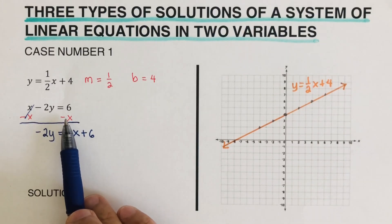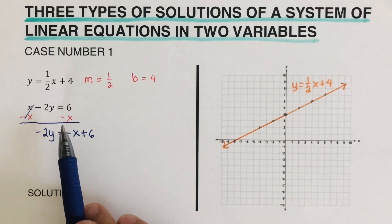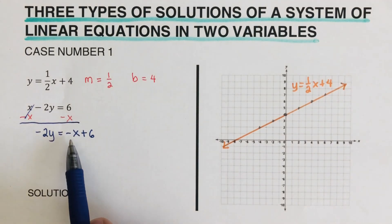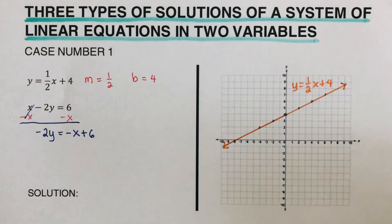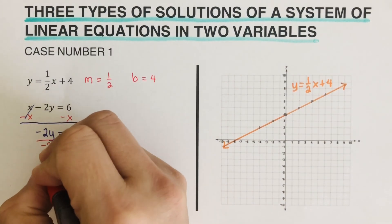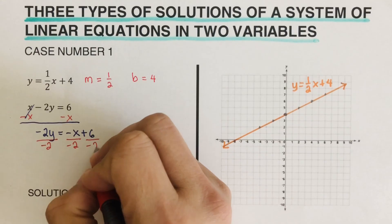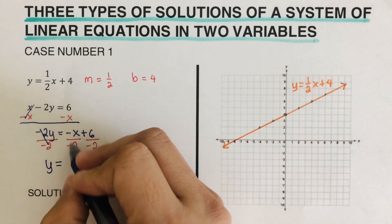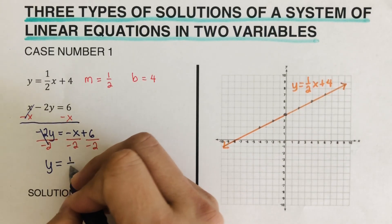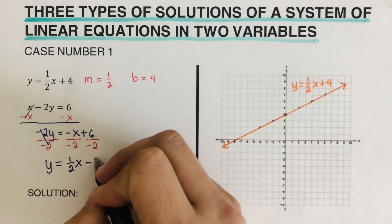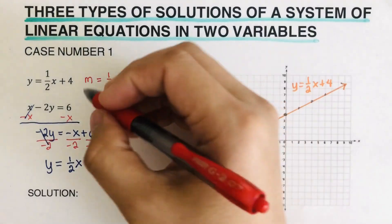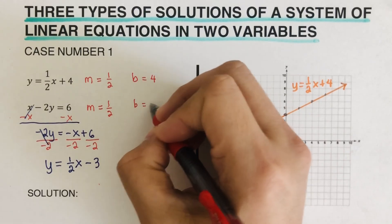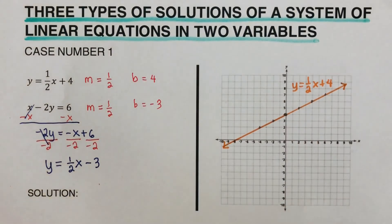Please remember — others might think this becomes negative seven x, but that is not correct because these two are unlike terms: one is an x and one is a constant. So that's negative x plus six. Since we want y by itself, we divide both sides by negative two. The left side becomes y, and negative over negative gives a positive, so that's positive one half x minus three.